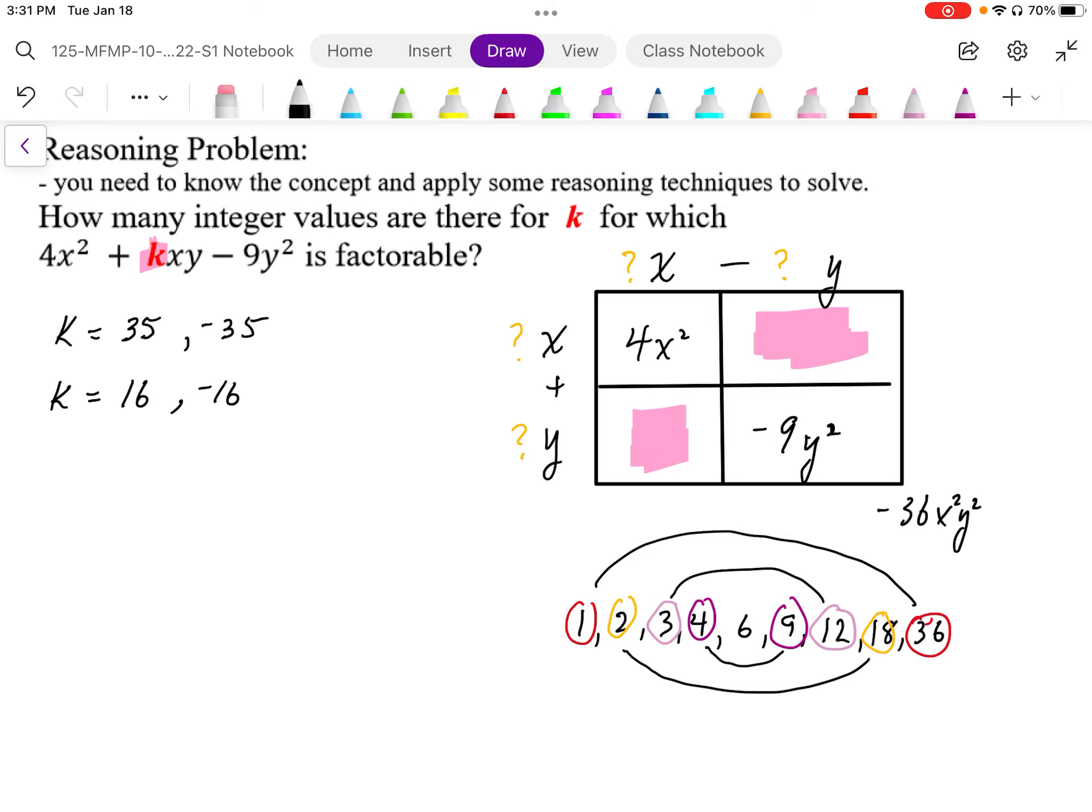When we pair up the 3 and 12, 1's positive, 1's negative, so we get positive 9, negative 9.